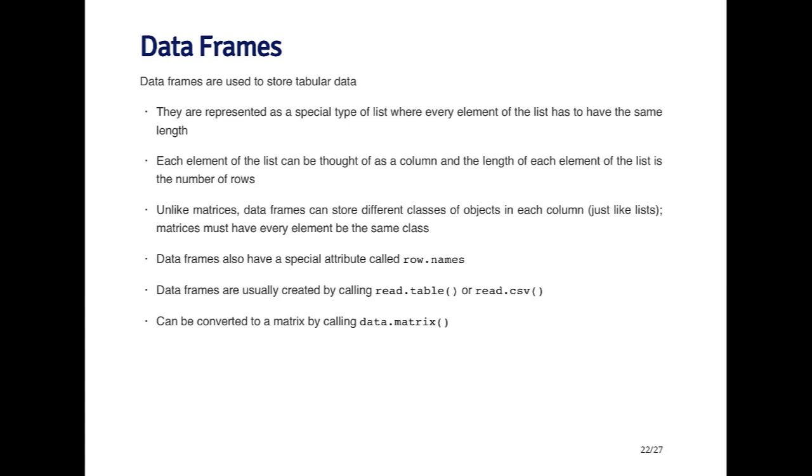If you have a data frame that has many different types of objects, and then if you coerce that into a matrix, it's going to force each object to be coerced so that they're all the same. So you may get something that's not exactly expected.